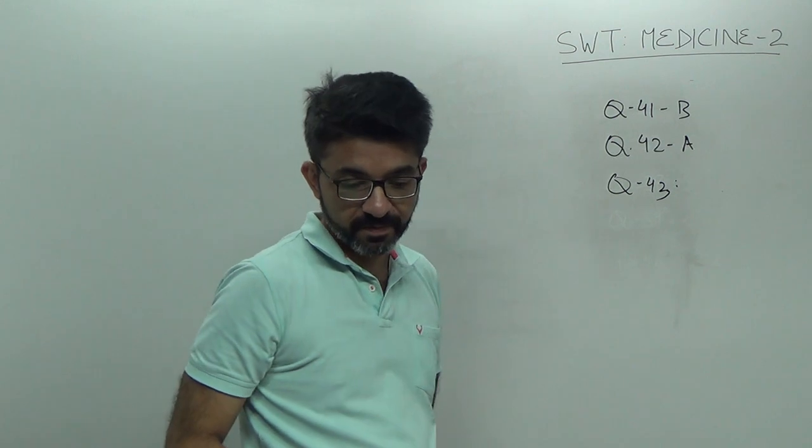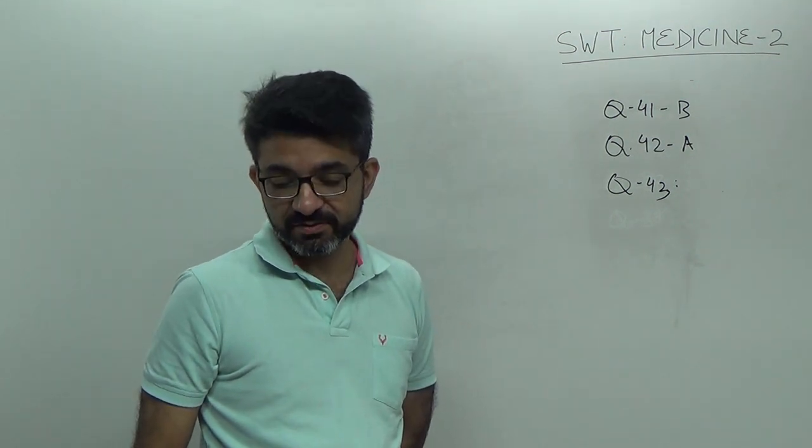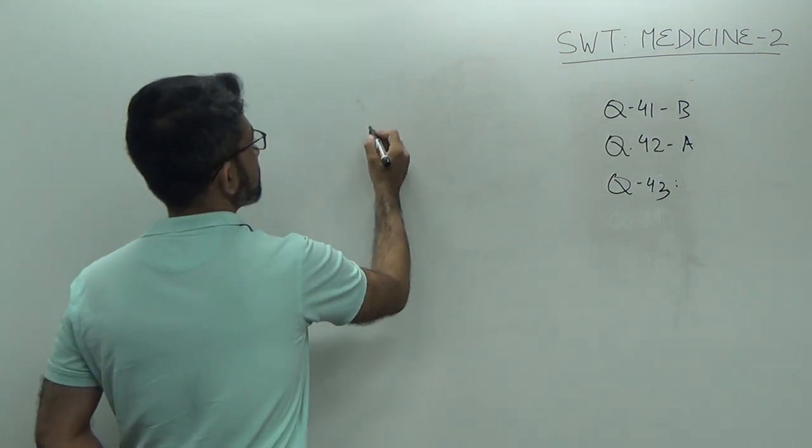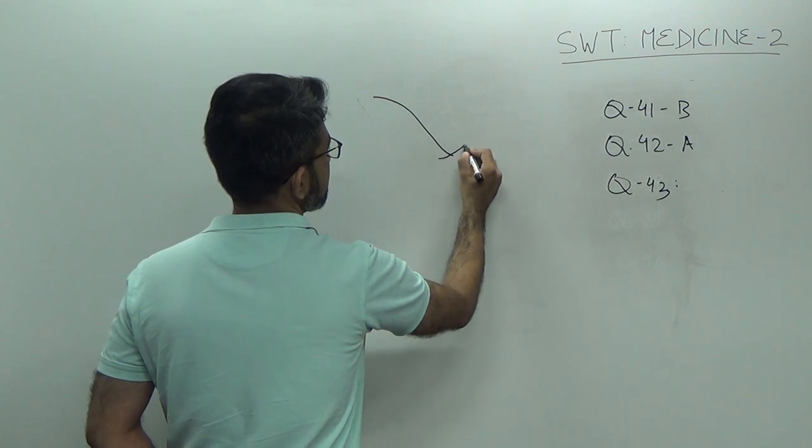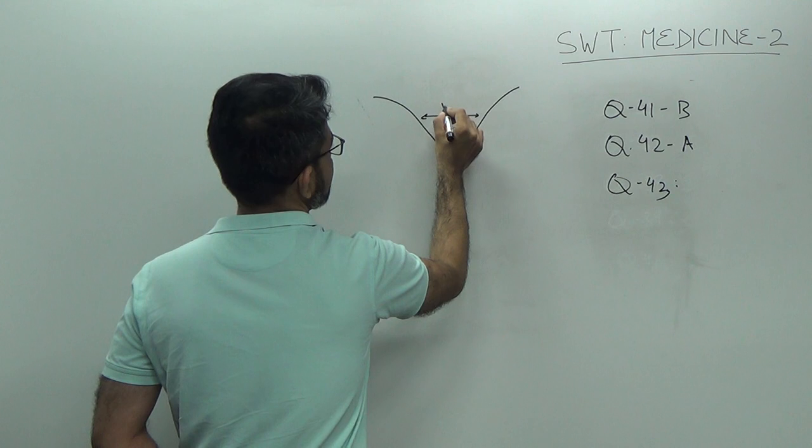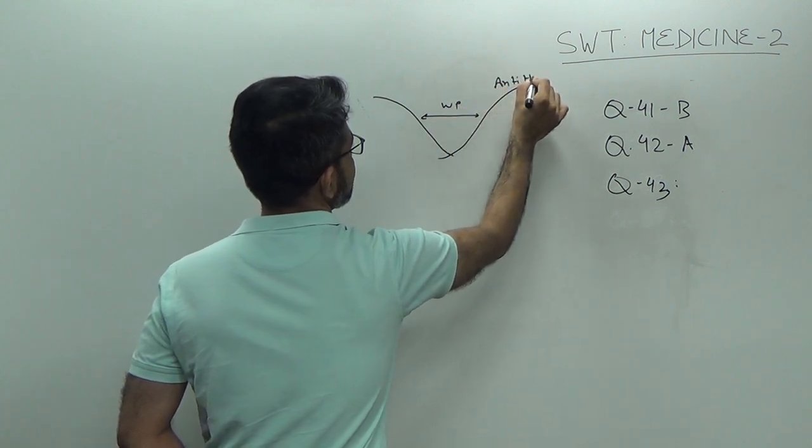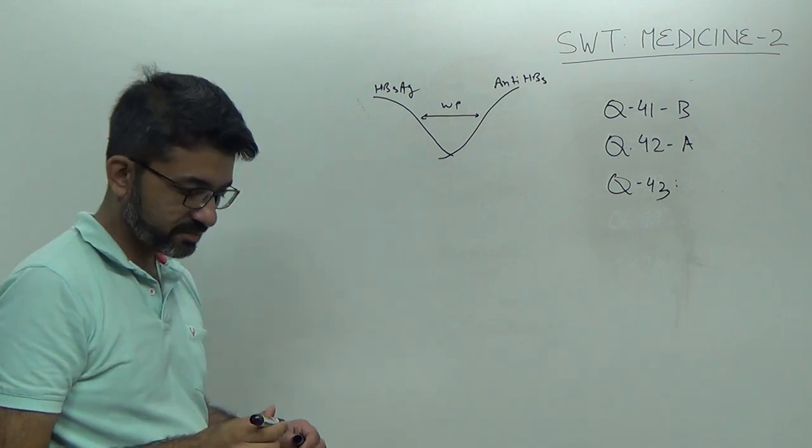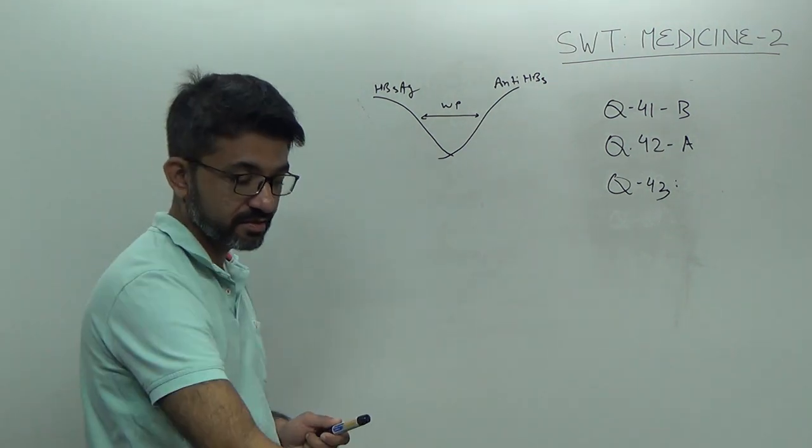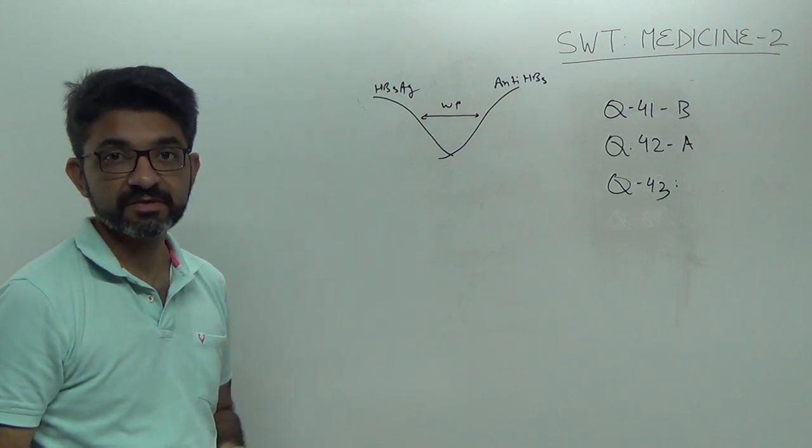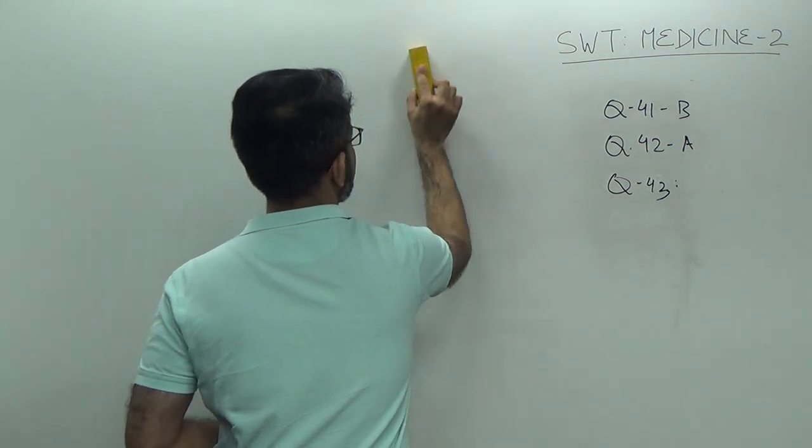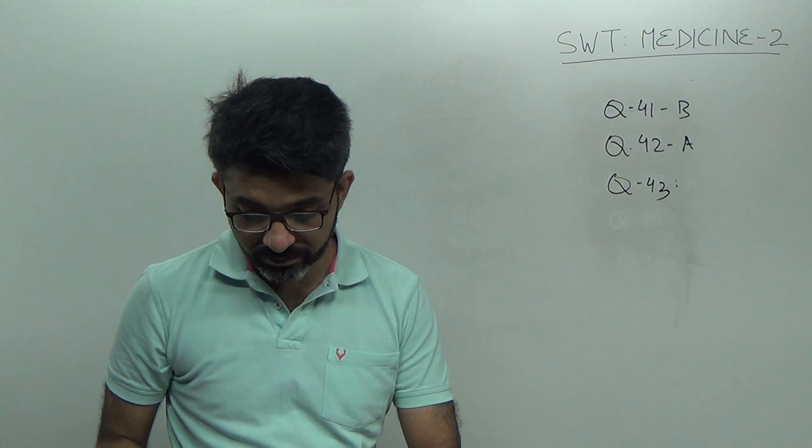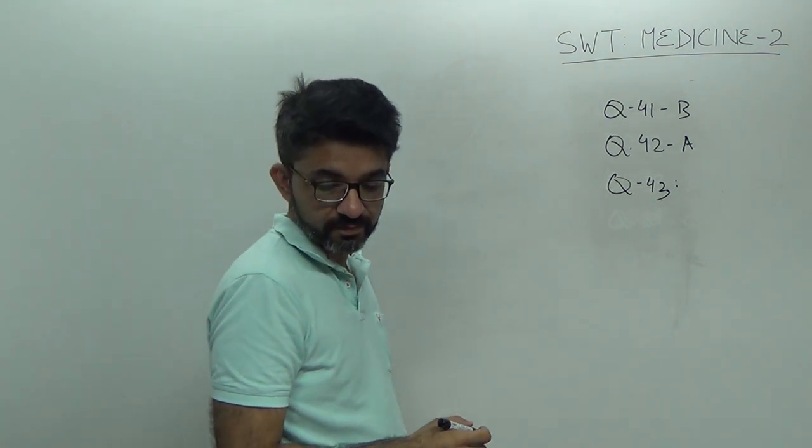Question number 43. See, what is the window period of hepatitis B? It is the disappearance of HBsAg and it is the appearance of anti-HBc. Say, disappearance of HBsAg and appearance of anti-HBc. So, this is what is window period. Anti-HBs and HBsAg. In this window period, patient is infected and the test for hepatitis B may be negative. So, one has to remember this. Patient, despite being HBsAg negative, are infected. So, answer is A.